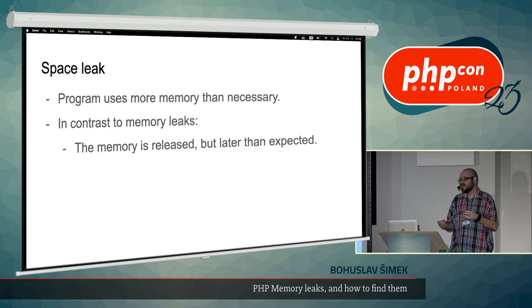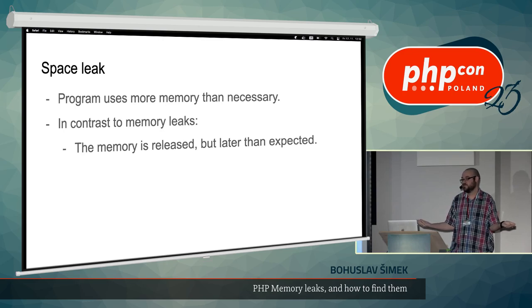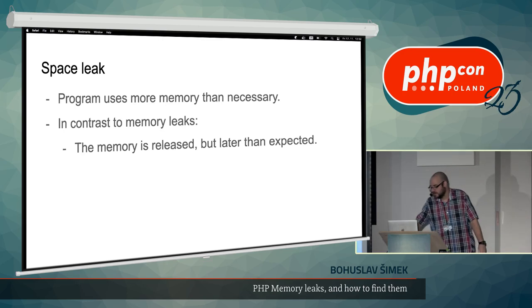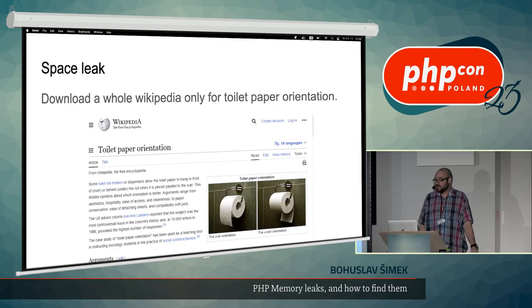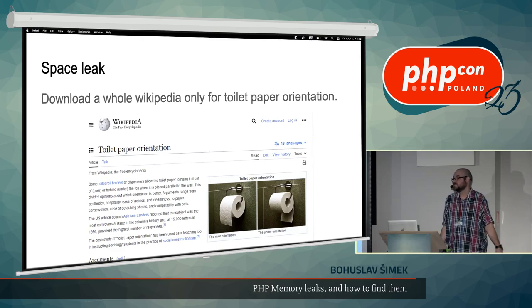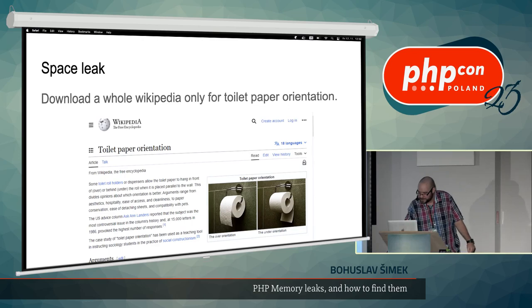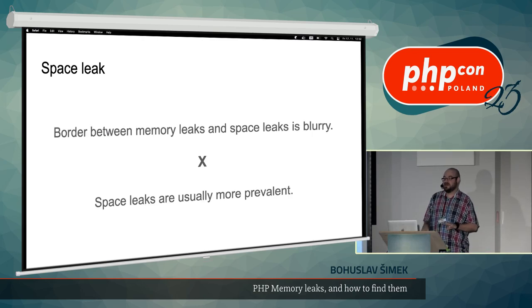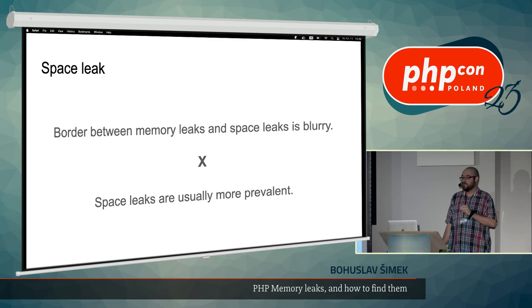Some programs can cause what is called a 'space leak' — a term I borrowed from functional programming. It means a program uses more memory than necessary. In contrast to memory leaks, the memory is ultimately released and returned to the system or to PHP, but later than expected. So you can free the memory, but by the moment it's freed, it's simply too late — it can clash with other processes. It's like downloading all of Wikipedia just to read one article about toilet paper orientation. Space leaks are more prevalent in PHP, as we cannot allocate or deallocate memory by hand.